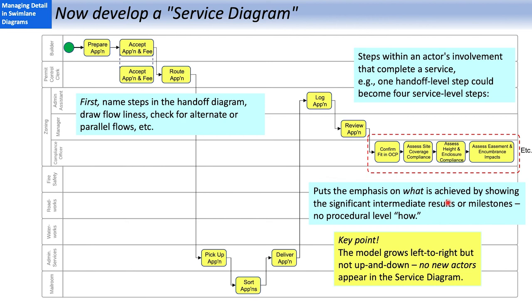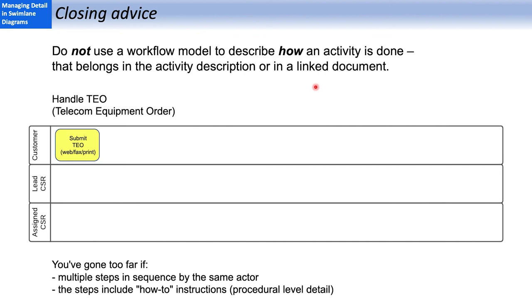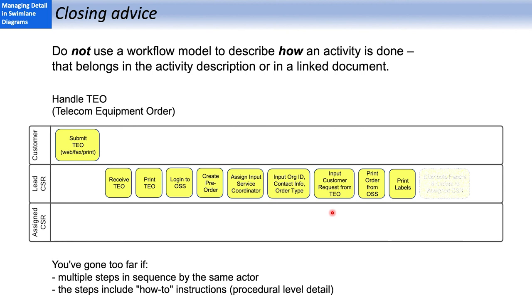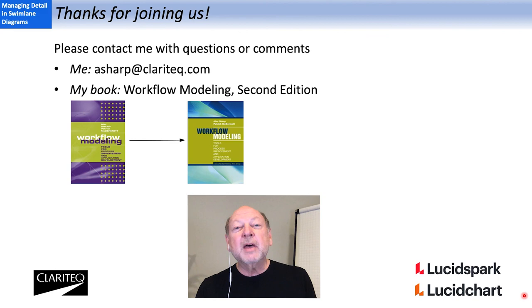I've been stressing all along in our webisodes, these swim lane diagrams are really effective for describing what happens, not so good for how. One clue that you may have gone too far is a whole set of steps in sequence by the same actor, especially if those steps include how-to instructions. We'll capture procedural level detail in a linked document.